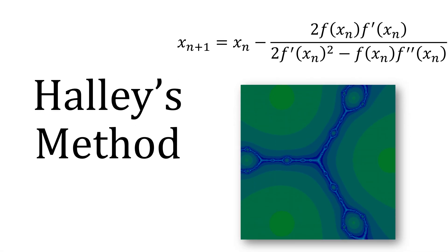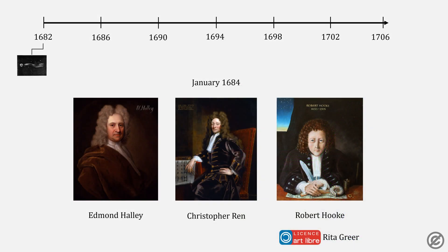Going on to Halley's method. There's a few errors here. First, there's a typo in Christopher Wren's name. He has a w.